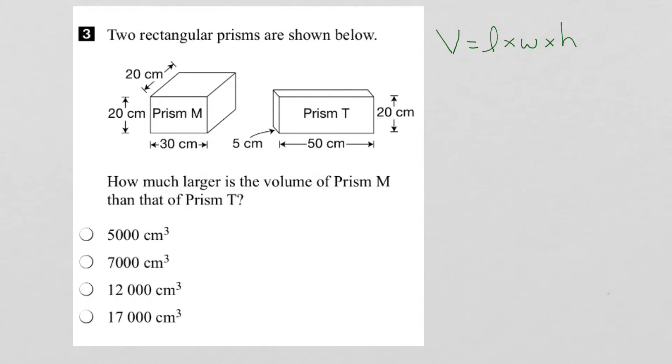Alright, so let's look at prism M. Here we can see that the length is this distance here, 30 cm. The width is this distance here, which is 20 cm. And the height is this distance here, which is also 20 cm.